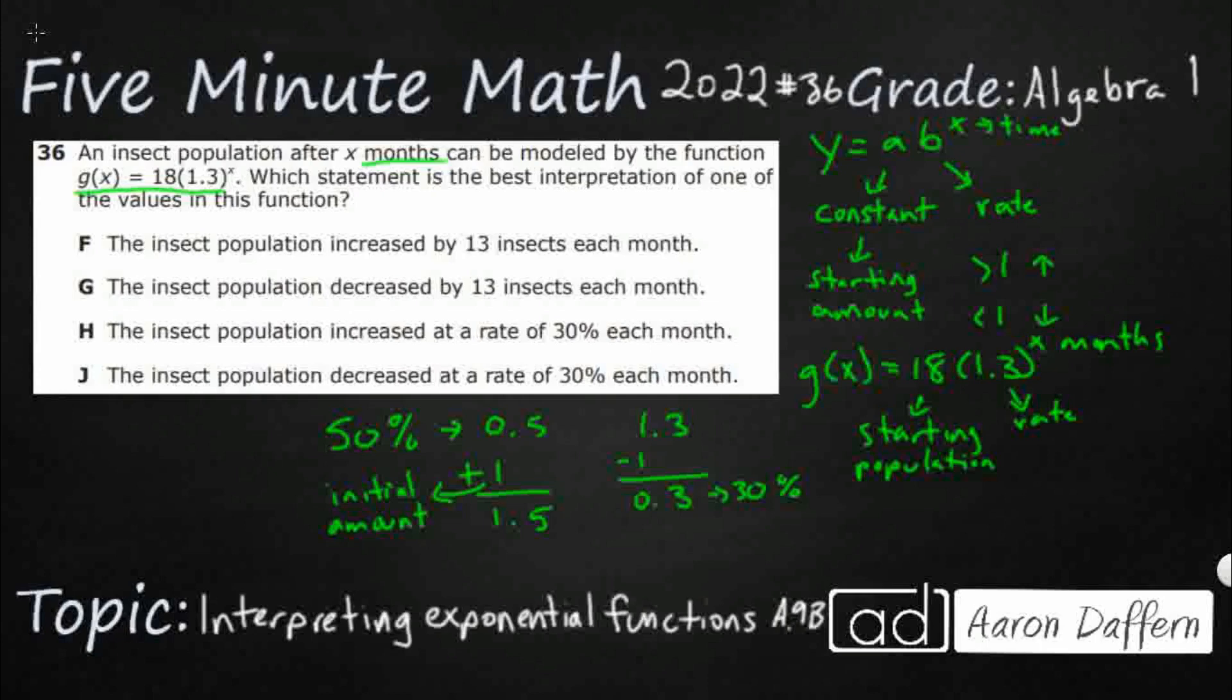F: The insect population increased by 13 or decreased by 13. Well, first off, that's not a 13. That's a 1.3. Once we take that 1 out, it's 30%. So we're not dealing with 13. So those are just wrong.